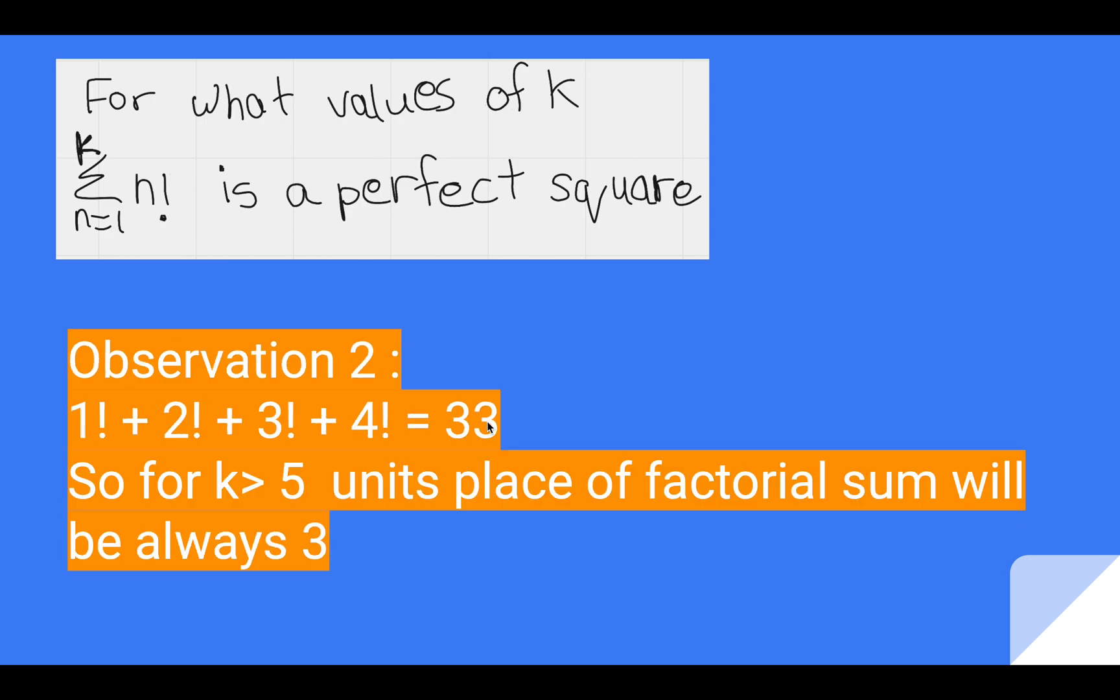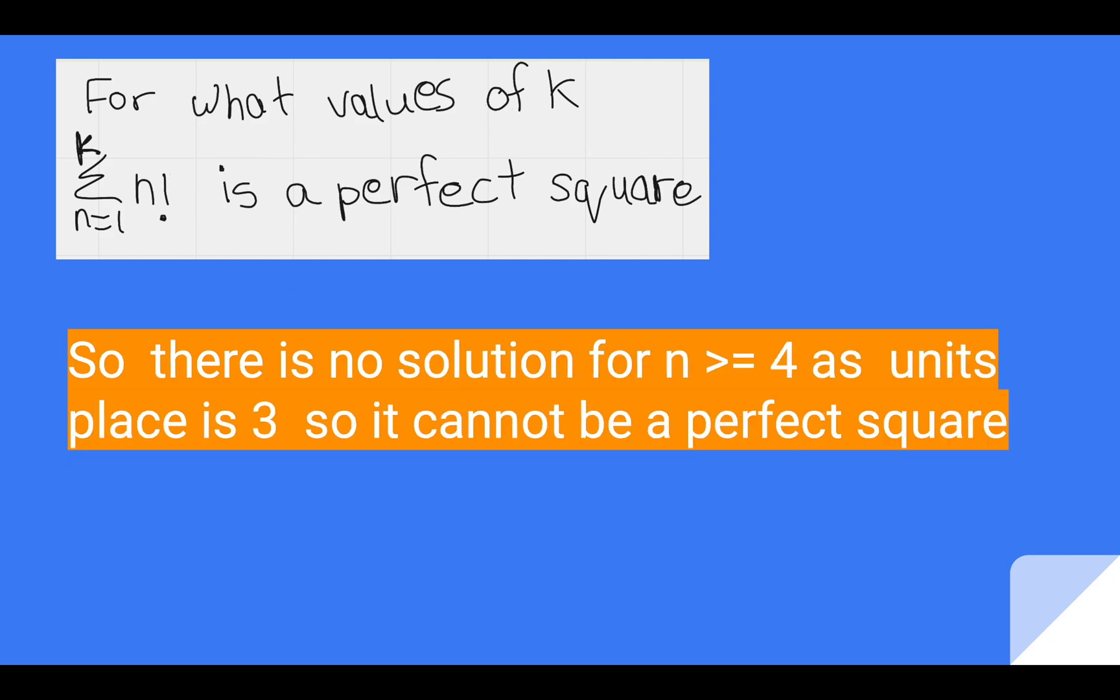And our number which is 3, our summation always ends in 3 for k greater than equal to 4. So our summation will always have a units place 3, so it cannot be a perfect square for k greater than equal to 4.